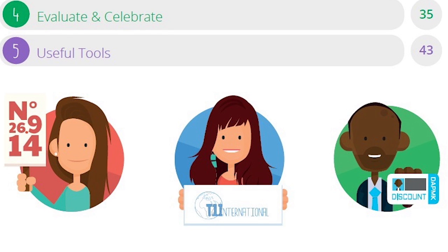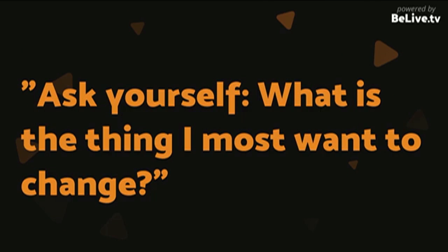You're going to be able to share that best practice with others who are trying similar things. First and foremost, hone in on what is the thing you most want to change — maybe it's locally, maybe it's nationally. Get your core team together, figure out what that is, and come up with a plan. Hopefully this toolkit helps you do that and get that action plan set out. That would be my suggestion for people who want to jump in but are a bit unsure.